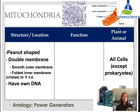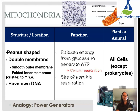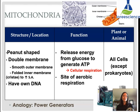Mitochondria is a peanut-shaped organelle with a double membrane — a smooth outer membrane and a folded inner membrane. These folds are known as cristae, and their purpose is to increase surface area so more reactions can happen. Interestingly, mitochondria have their own DNA, known as maternal DNA because it comes directly from your mother. Their function is to release energy from glucose to generate ATP energy — this is cellular respiration. This is why mitochondria are sometimes referred to as the powerhouse of the cell. They make the energy needed for cells to function and are the site of aerobic respiration. All cells except prokaryotes have mitochondria. Analogy: like a power generator.